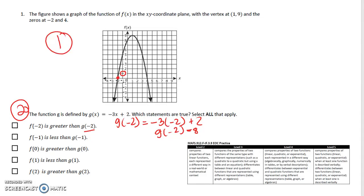f(-1), which would be right here, is less than g(-1). So again, we're going to plug in -1. We would end up with 3 plus 2, which is 5. That one is also not true, because they're actually the same.